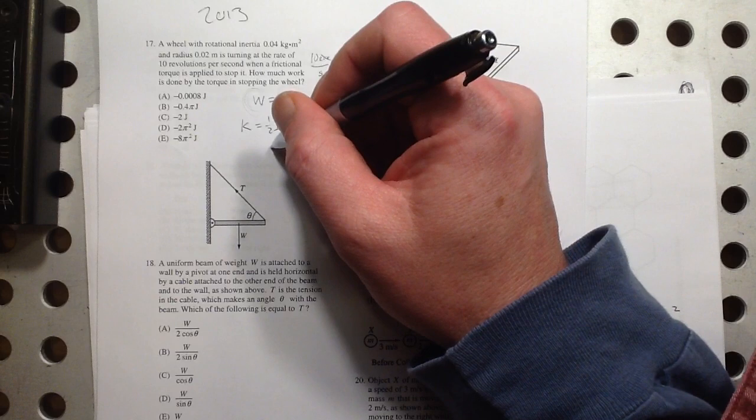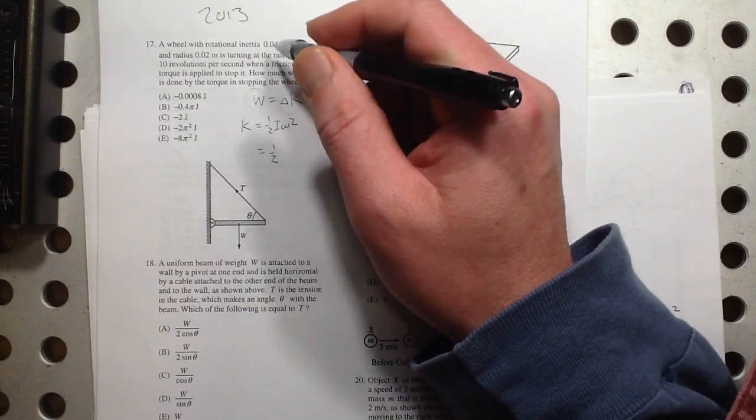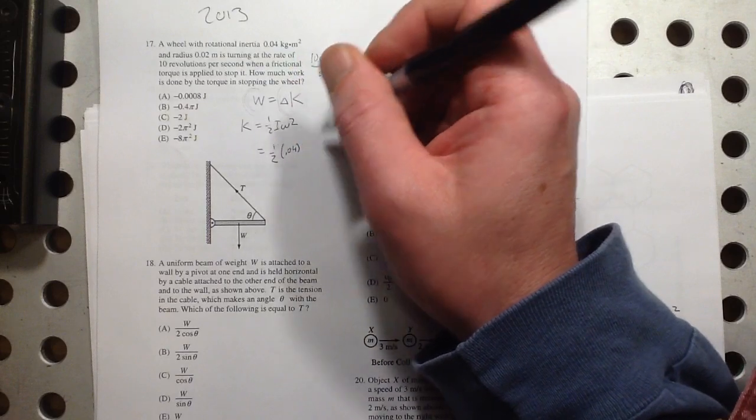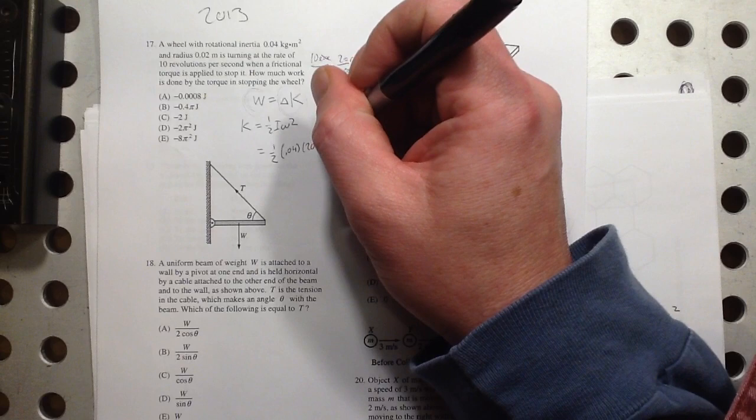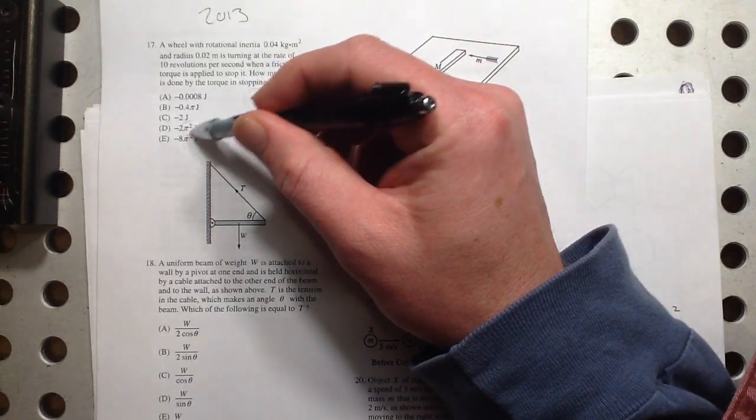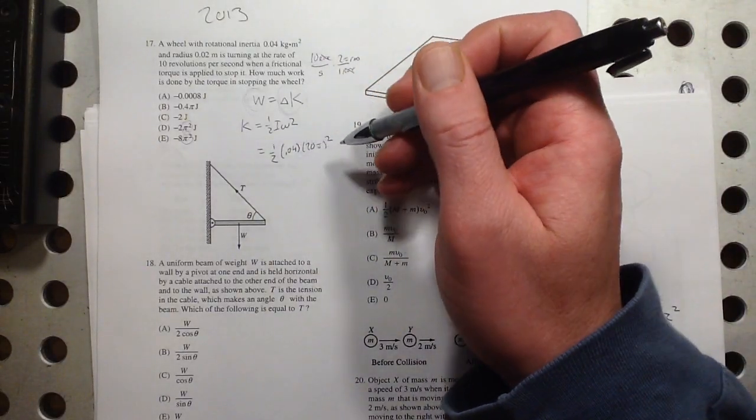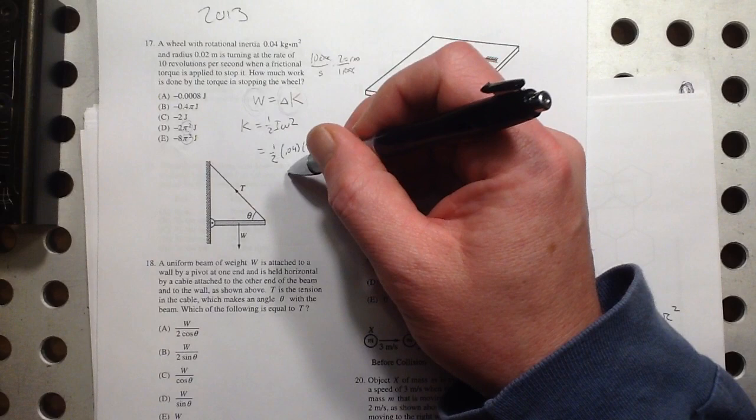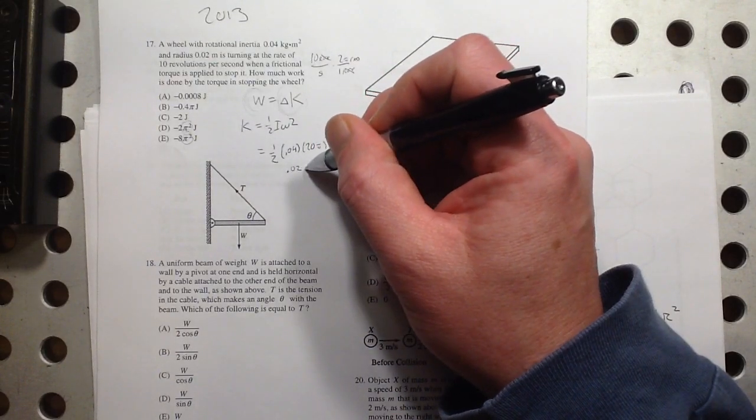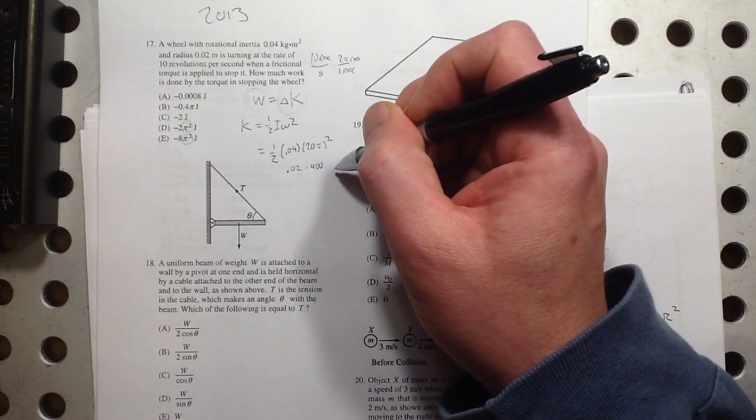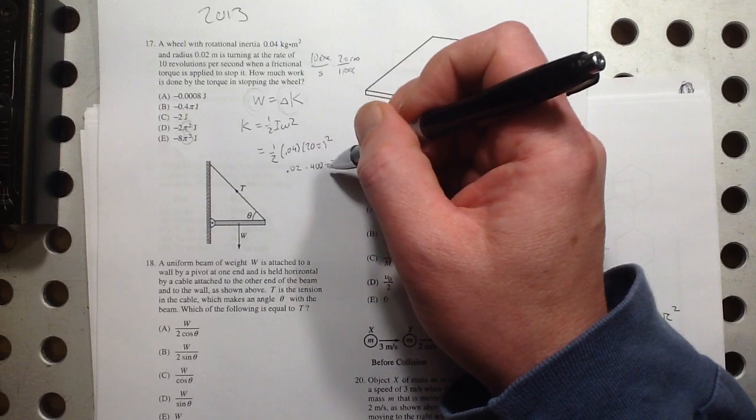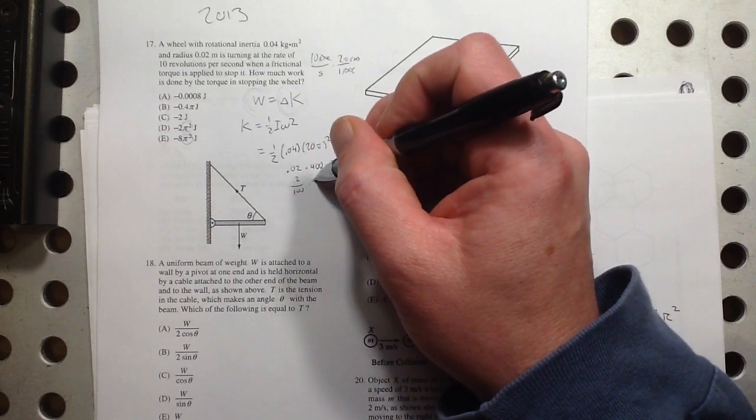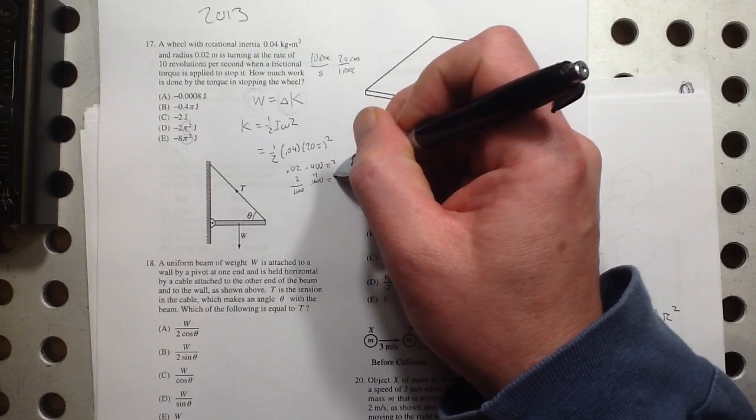That's the conversion that you need to do there. So that means I've got 1 half times the rotational inertia, which is 0.04 times 20 pi squared. So it's going to be one of these pi squared ones. This was back before you could put this in your calculator and do it that way. But this is before calculator, so we should be able to do this. So let's see, 1 half of that, that's 0.02 times, and then 20 squared is 400 times pi squared. So 0.02, that's the same as 2 over 100 times 400, so that's 4, so 8 pi squared.